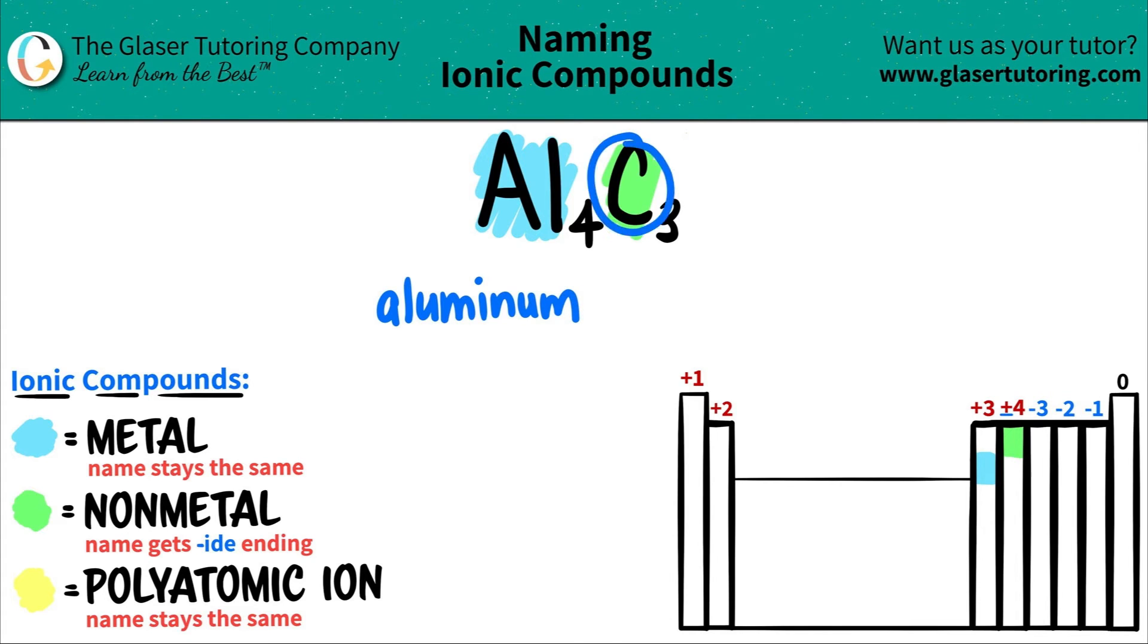And then C for carbon—that's the nonmetal. The nonmetal always gets the -ide ending. So it was carbon, but now I have to change it to carbide. You have to drop the O-N and add -ide to get that -ide ending.